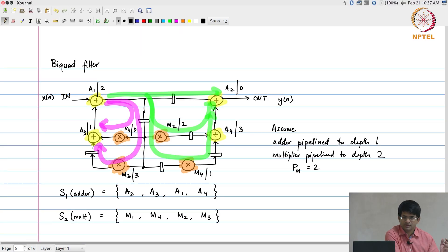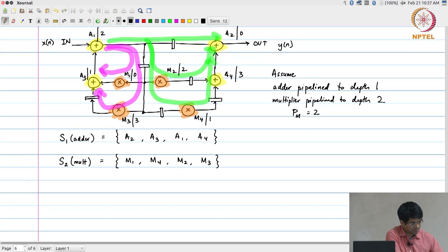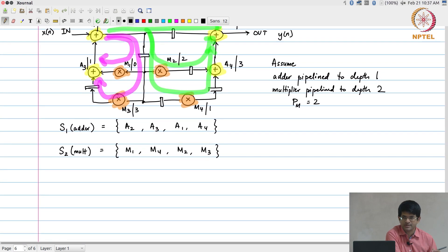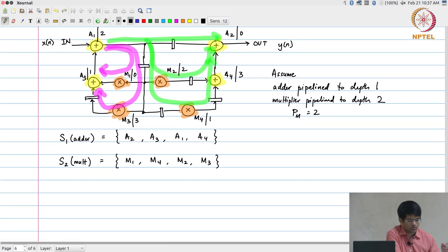Alright, with this information that I have over here, let us see if we can go forward and compute all the df values. In order to talk about the df values we need to understand what are the different edges that are present in this data flow graph to start with.